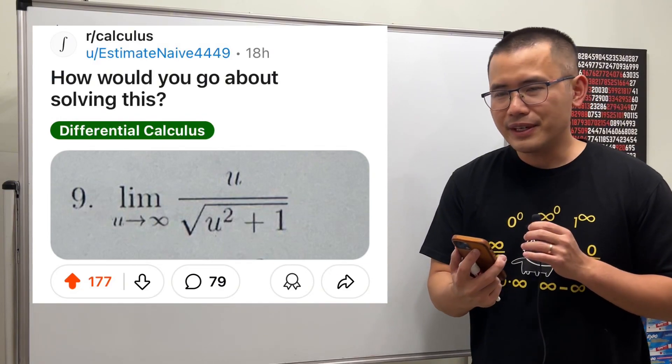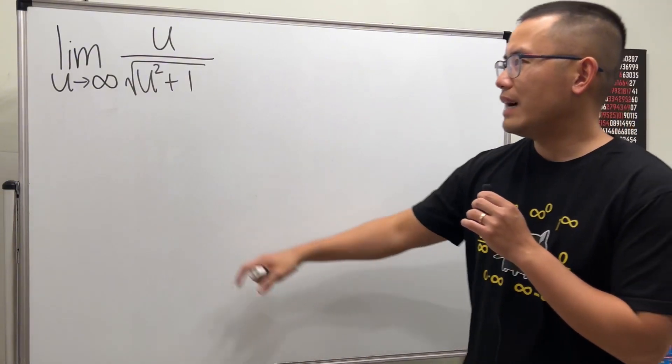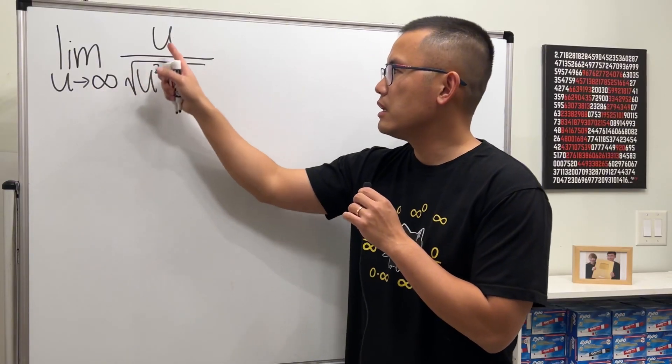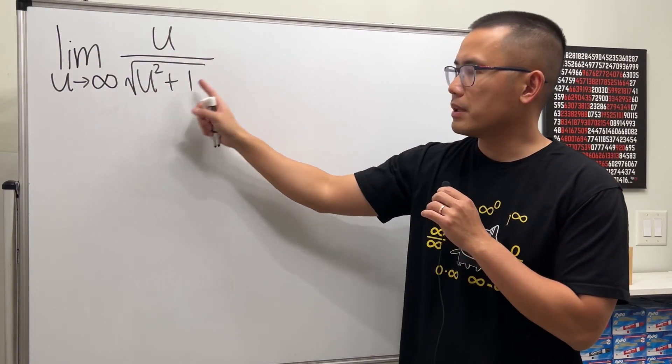How would you go about solving this? Alright, let's have a look. Here we have the limit as u going to infinity of u over square root of u squared plus 1.